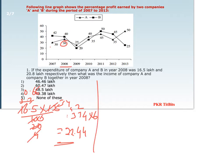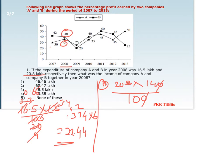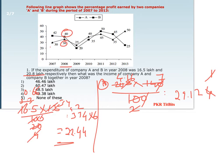This is the income for company A. Now for company B: 100% is 20.8 lakhs and we have to find 140%. So it is 20.8 × 140 ÷ 100, which comes out to be 29.12 lakhs.